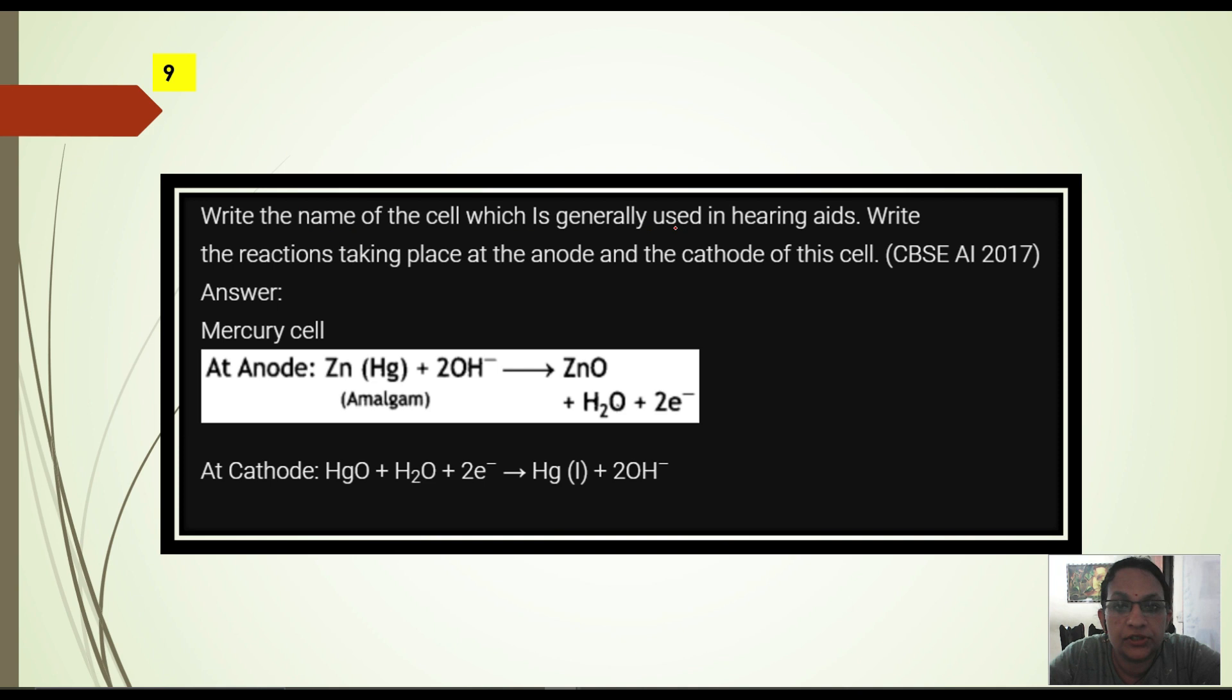Next. Write the name of the cell which is generally used in hearing aid. Write the reaction taking place at anode and cathode of the cell. Generally, in hearing aid the cell used is mercury cell. At anode the reaction is zinc plus 2 hydroxide ions gives zinc oxide, water and 2 electrons. So this is the overall cathode reaction: HgO + H2O + 2e- gives Hg + 2OH-.